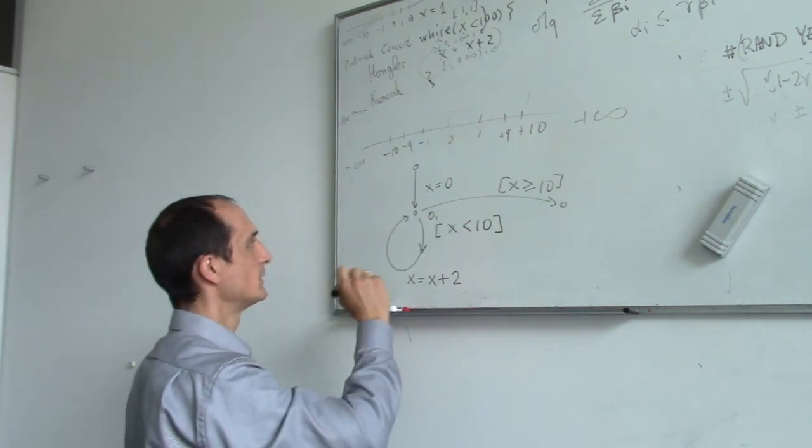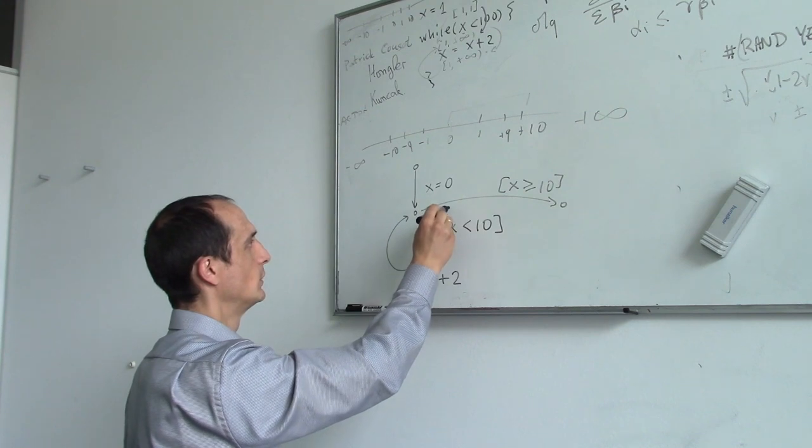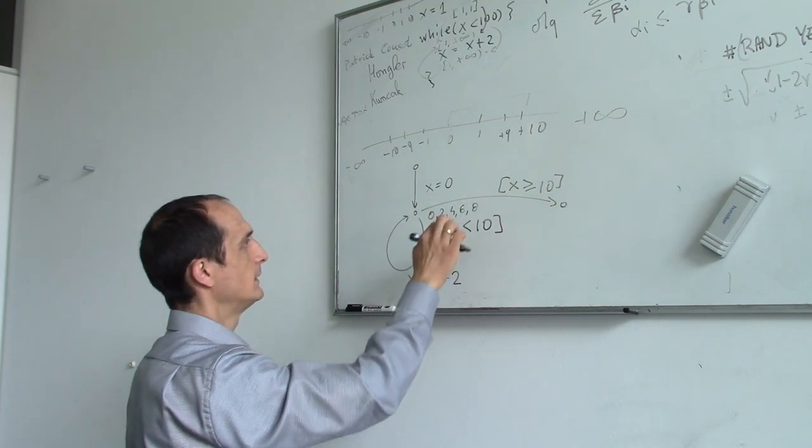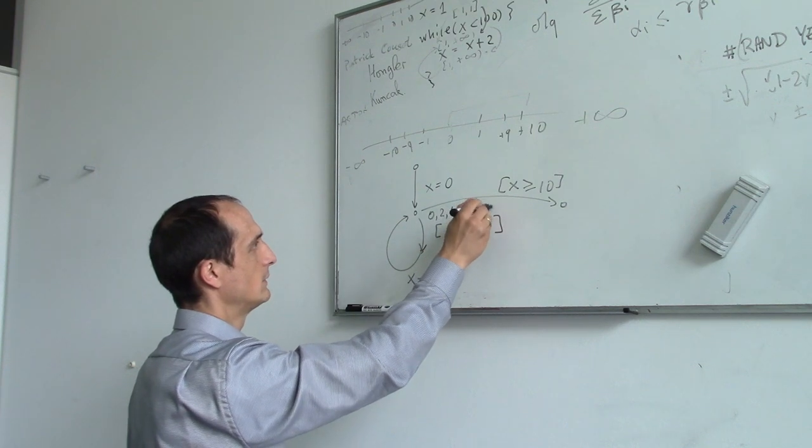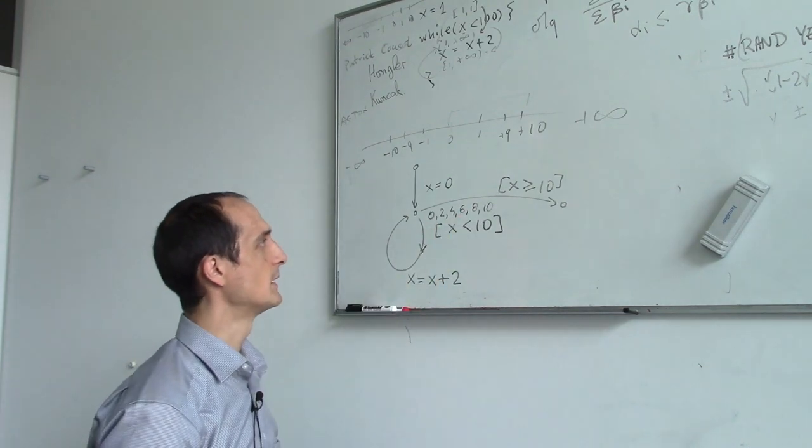In exact semantics, we would have set of values 0. And then if we go around the loop, we would have here 2, 4, 6, 8. And then we would have the value 10, but 10 would not pass this test. So it would exit here, so this would be the number.